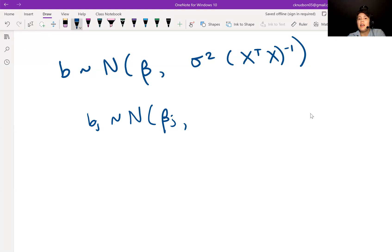The variance of the J-th component of B is sigma squared times, now we need to go into X transpose X inverse and find the J plus one-th entry, and multiply that by sigma squared, and that will give you the variance for BJ.